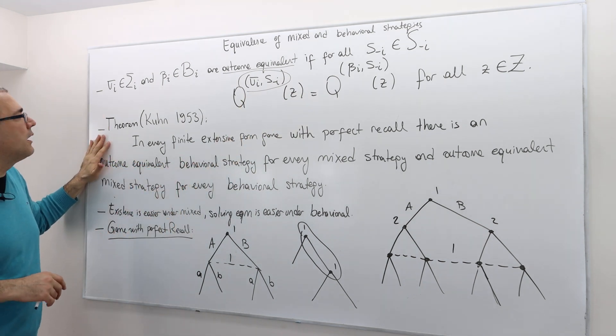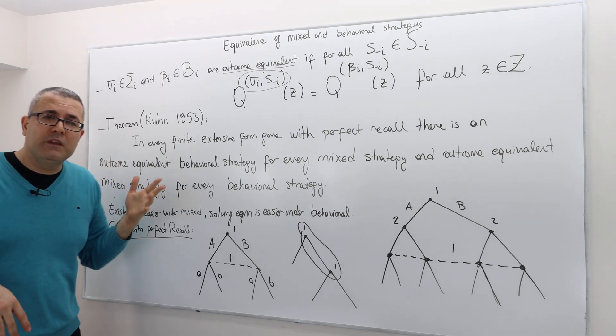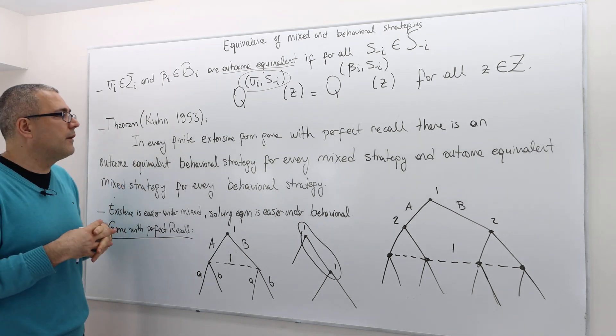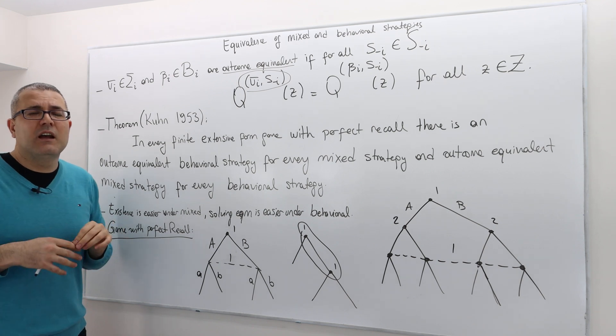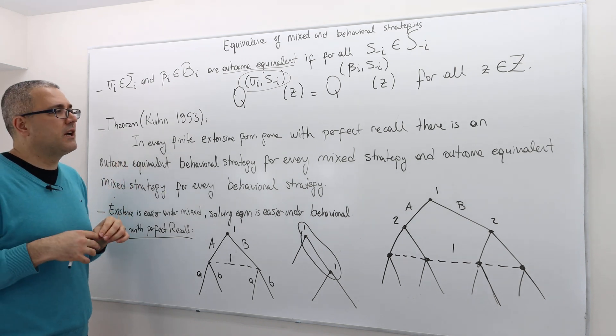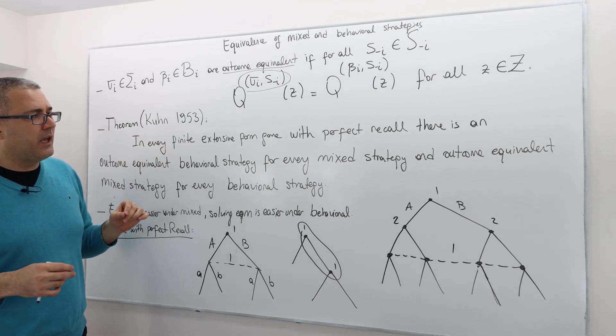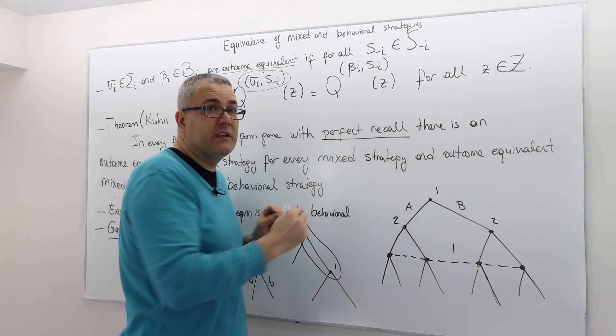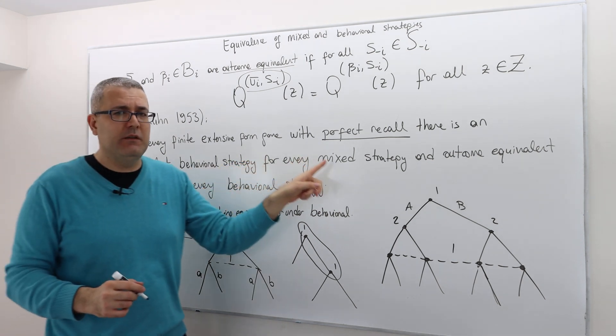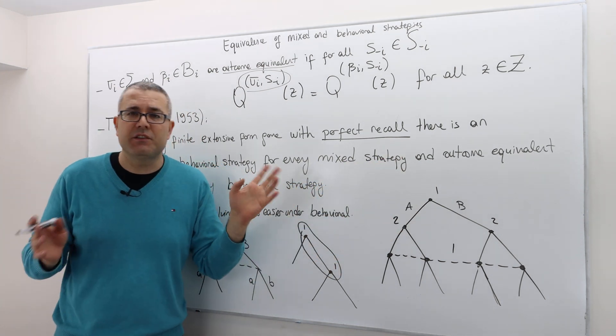Thanks to Kuhn, he proved this theorem in 1953, along with the formal definition of extensive form game. Most of the definitions that I use in extensive form games here, actually, thanks to Kuhn. And in fact, the formalization is, again, thanks to Ariel Rubinstein and Osborne Rubinstein textbook, a brilliant textbook. Here's the Kuhn's theorem. In every finite extensive form game with perfect recall, there exists an outcome-equivalent behavioral strategy for every mixed strategy and an outcome-equivalent mixed strategy for every behavioral strategy.